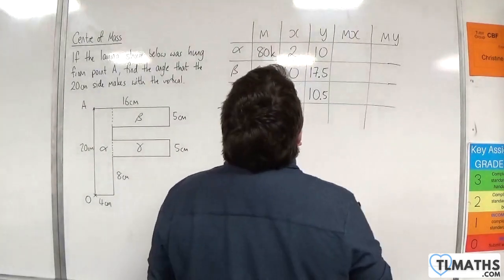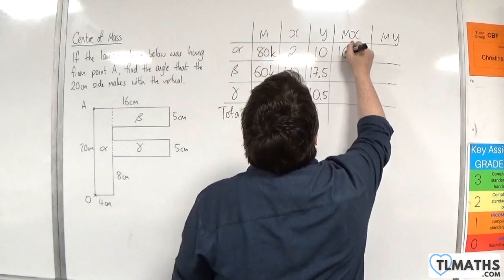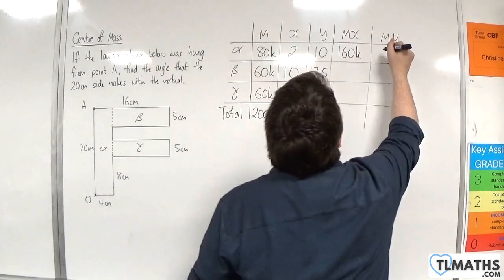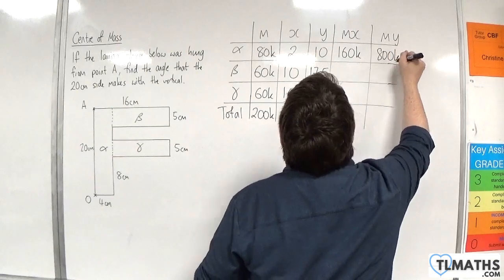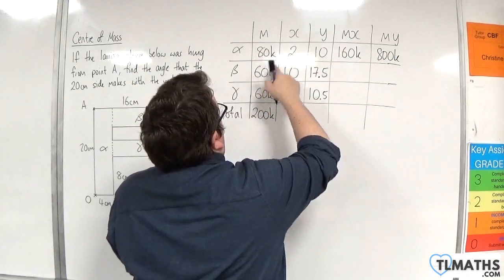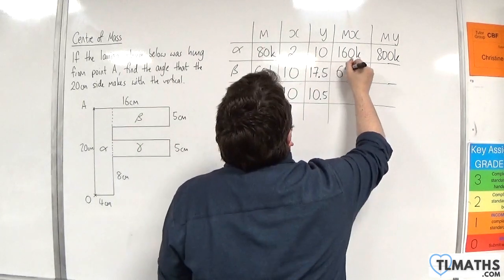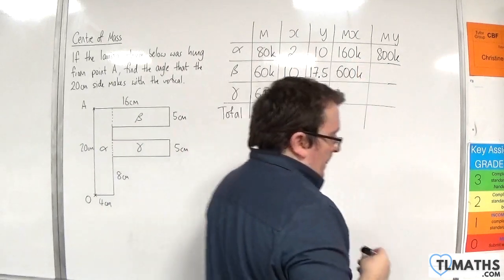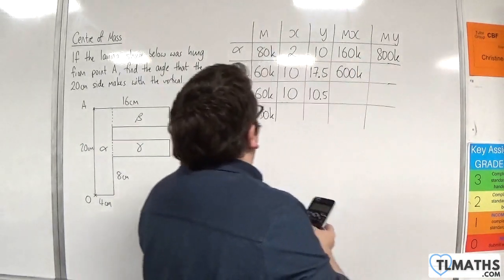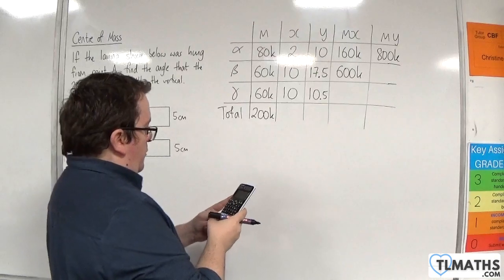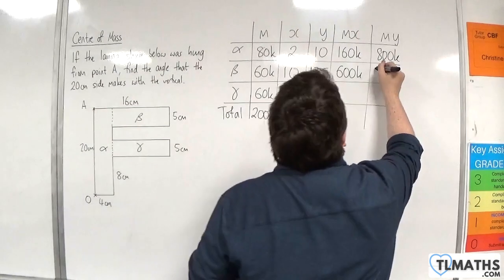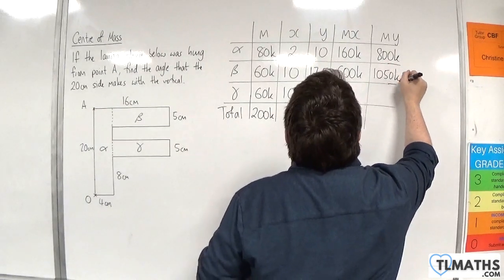So we've got m times x, so that's going to be 160k. And then m times y, so 800k. Then we've got 60k times 10, so 600k. Then we've got 60 times 17.5, so 1050k.